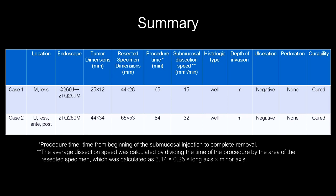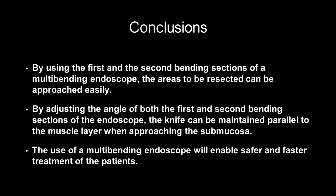Summary of two cases. By using the first and second bending sections of a multi-bending endoscope, the areas to be resected can be approached easily. By adjusting the angle of both bending sections, the knife can be maintained parallel to the muscle layer when approaching the submucosa. The use of a multi-bending endoscope will enable safer and faster treatment of patients.